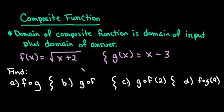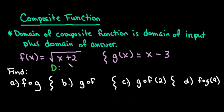When you are dealing with composite functions, it is helpful to remember what your domain is going to be. The domain of your answer, or the domain of your composite function, is going to be the domain of your input plus the domain of the answer. Because we have a radical function, and I can only take the square root of positive values, the domain is all values of x such that x has to be greater than or equal to negative 2, because I can only take the square root of 0 and all positive values — I cannot take the square root of a negative value and get a real number.